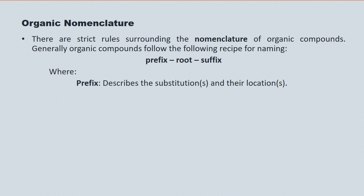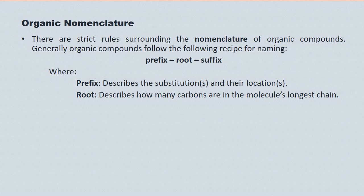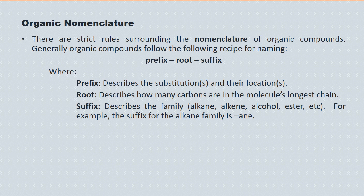The prefix typically describes substitutions or attachments onto the longest chain of the organic compound. The root describes that longest chain and gives a name to it, depending on the number of carbons in the chain. The suffix describes the homologous series that the molecule belongs to — whether it's an alkane, an alcohol, an ester, and the like. For example, the suffix for the alkanes is the '-ane' suffix.